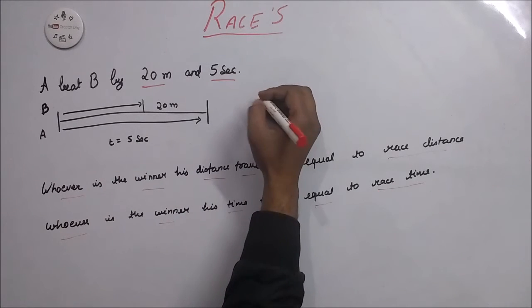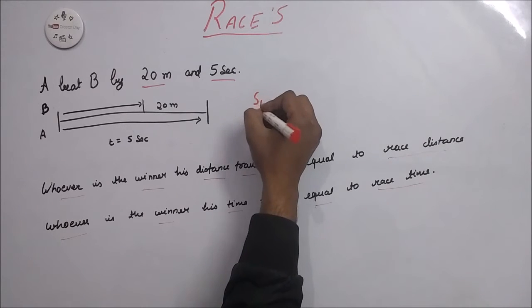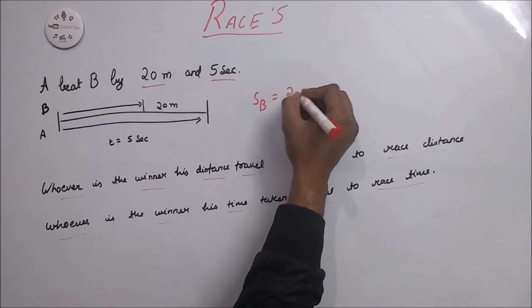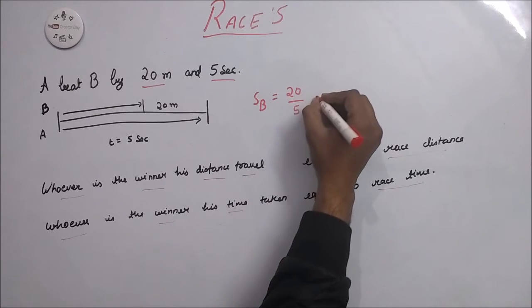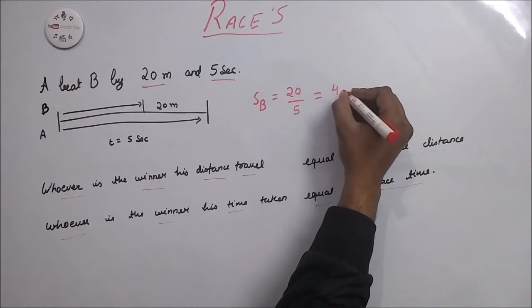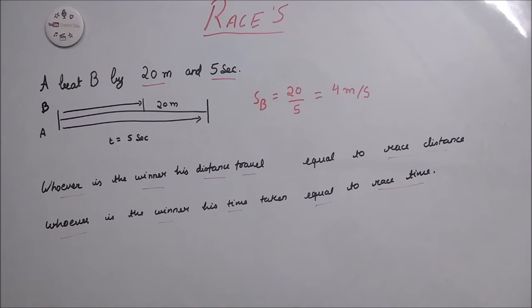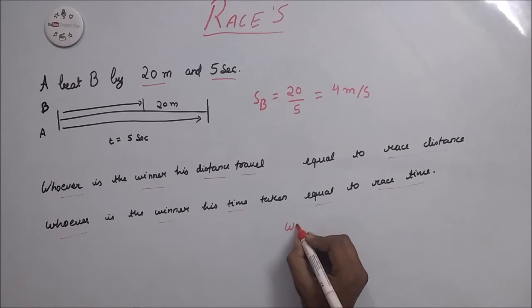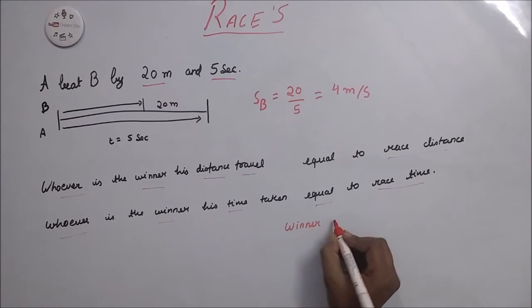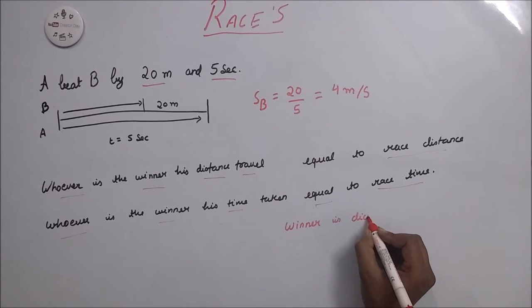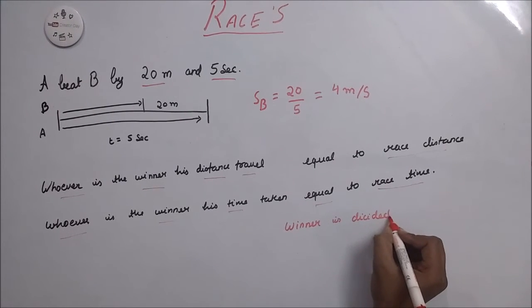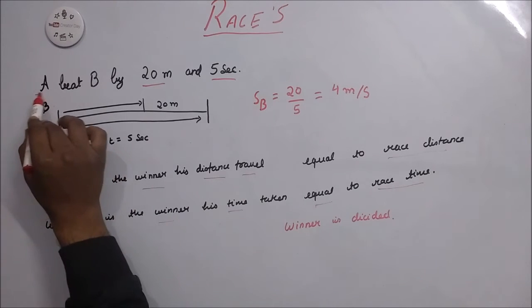And in this condition, if we calculate speed of B, it is 20 divided by 5 which is 4 meters per second. You have to apply the last three concepts when your winner is decided. Here A is the winner. And the last concept: A beat B, so A is winner.